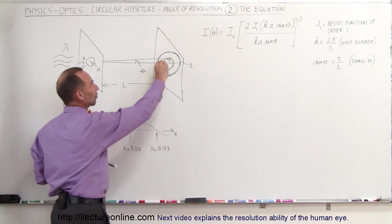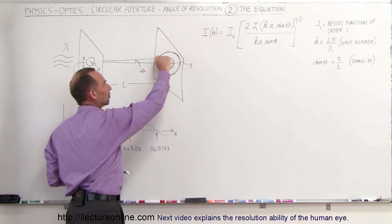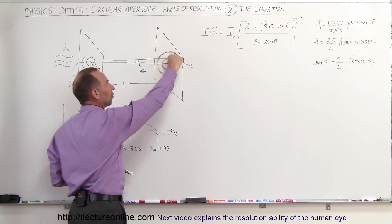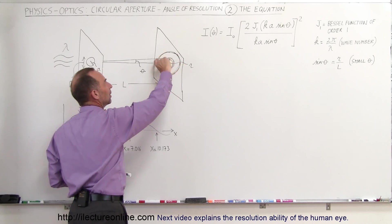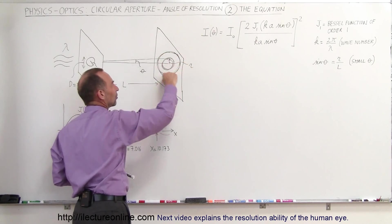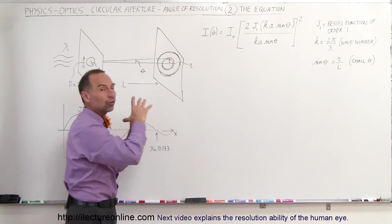You can see that you have the central maximum, the first minimum, then the first maximum, the second minimum, second maximum, third minimum, and so forth. So we have that circular pattern that moves out, which is called the diffraction pattern.